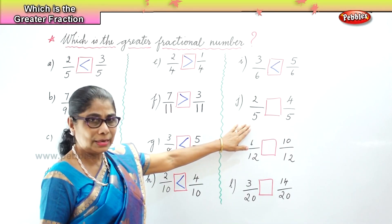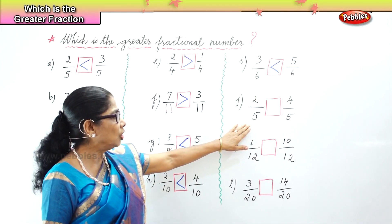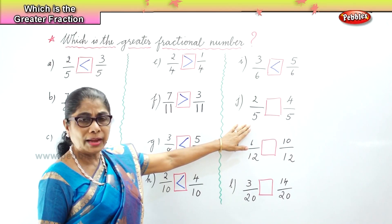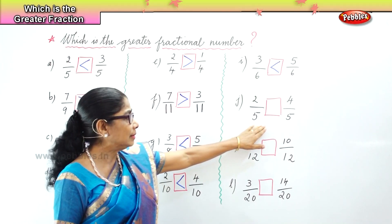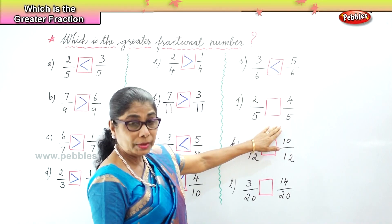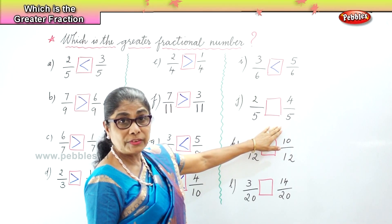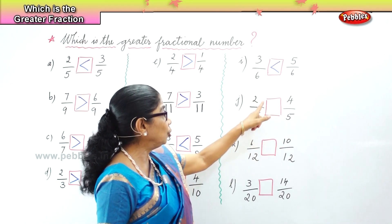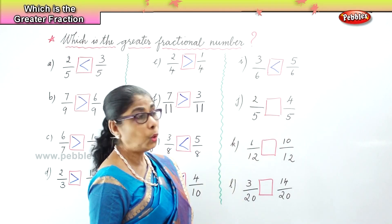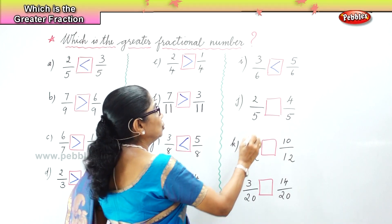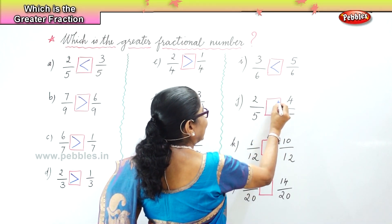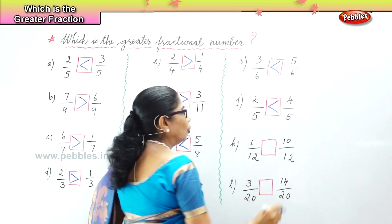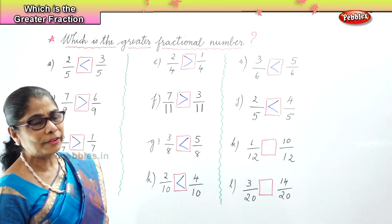Now let's look at this. We have the denominators the same — two by five and four by five. The whole is divided into five parts. We have four by five parts and two by five. We know four is bigger than two. So four by five is greater than two by five.